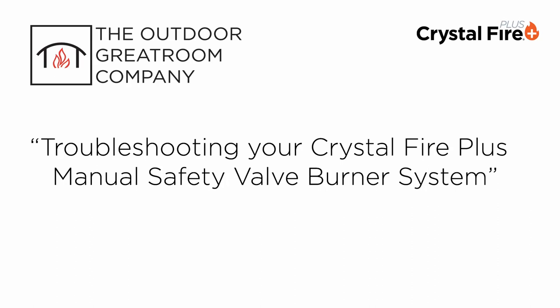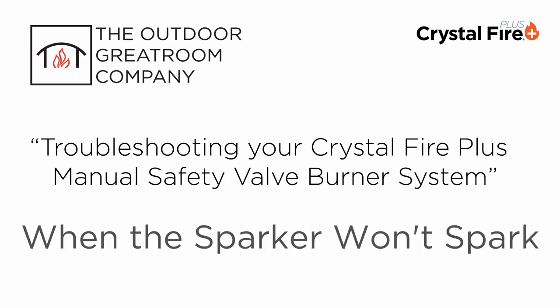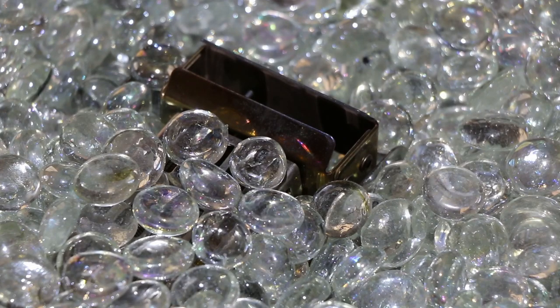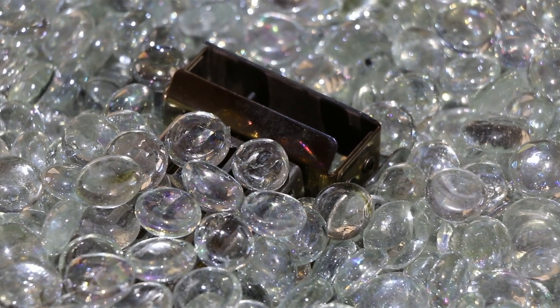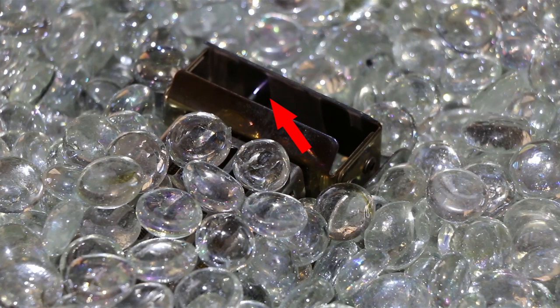This video will go through the basic troubleshooting of your Crystal Fire Plus manual safety valve burner system when you cannot get the sparker to spark. When depressing the sparker button on the control panel, you should get a spark on top of the burner between the tip of the igniter and the steel wind guard as shown here.